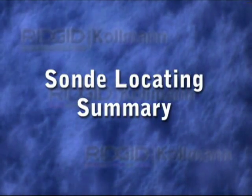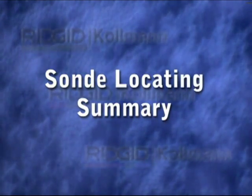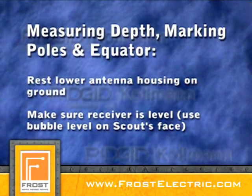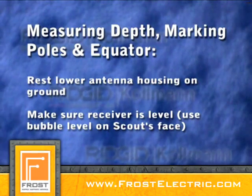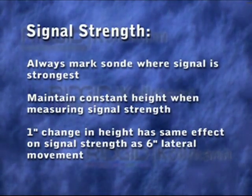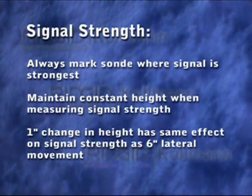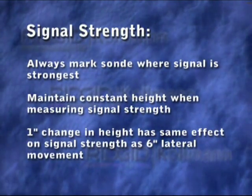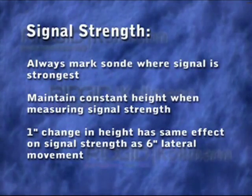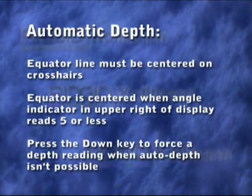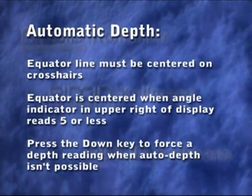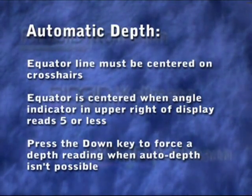In the past few minutes, we showed you the basics of locating a remote transmitter. Here are a few key points to remember. When marking the poles and equator and measuring depth, make sure the lower antenna ball is touching the ground and use the bubble level on the receiver's face to make sure the receiver is level. You can use Scout's mapping functions to help you find the sonde or to confirm your locate, but always mark the transmitter's location at the point where the signal is strongest. When making your final signal strength measurement, keep the receiver at a constant height — even slight variations can cause drastic changes in the signal strength reading. Scout's automatic depth feature only works when the equator line is centered on the display. When the angle indicator in the upper right corner reads 5 or less, the equator is centered well enough for Scout to display the depth automatically.